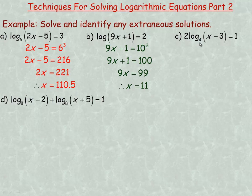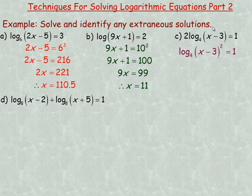For the next one, when you have a constant in front of your logarithm multiplied by the log, you can raise the argument to the power of that coefficient in front. This is actually the power law — the 2 comes up as an exponent. You could also divide 2 into both sides, but I'm going to use the power law here since this is about logarithms.